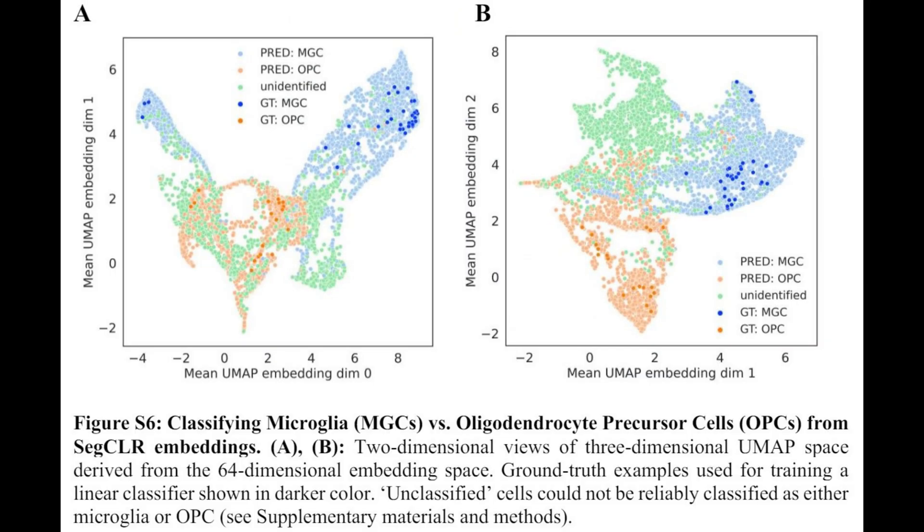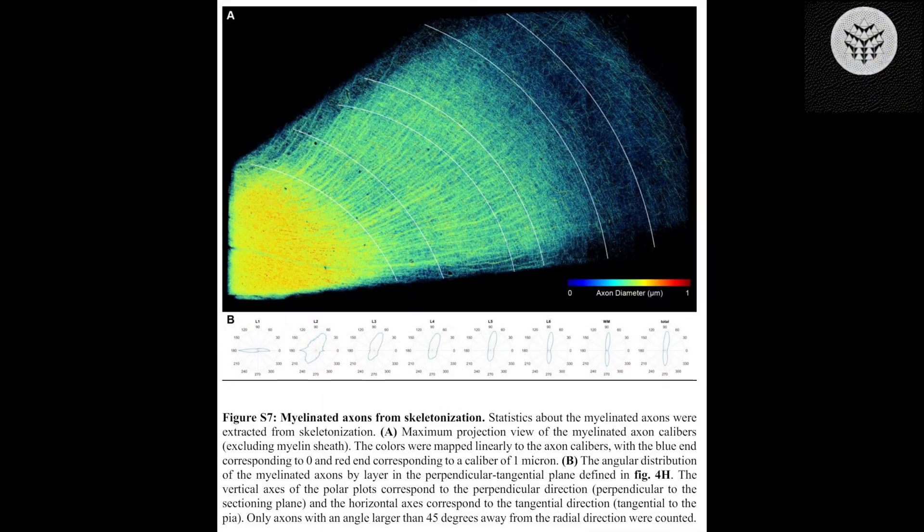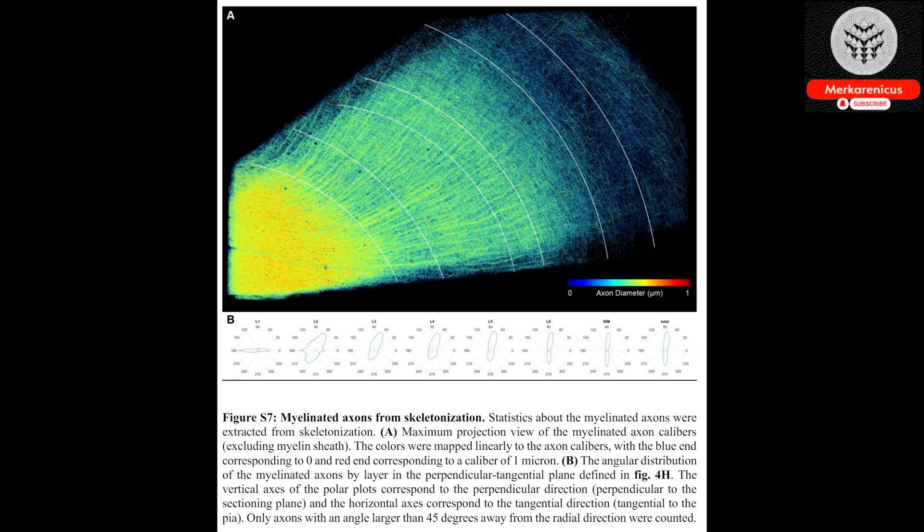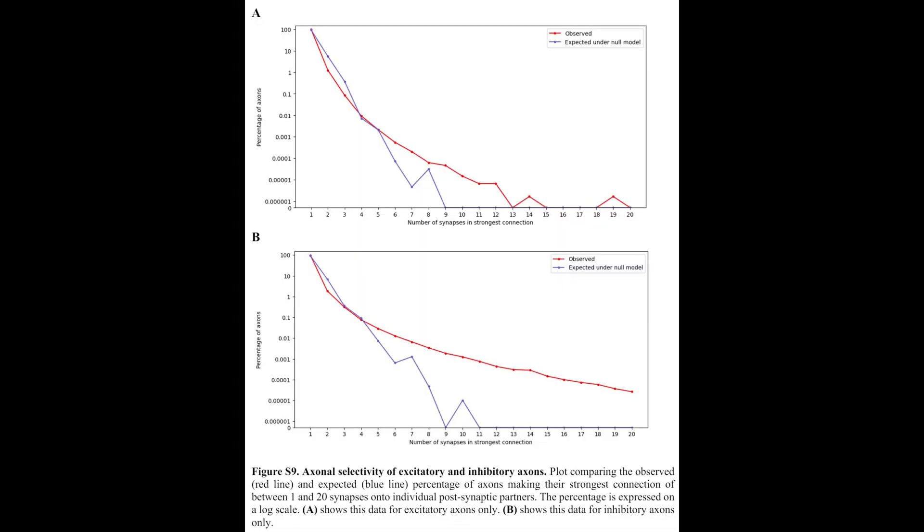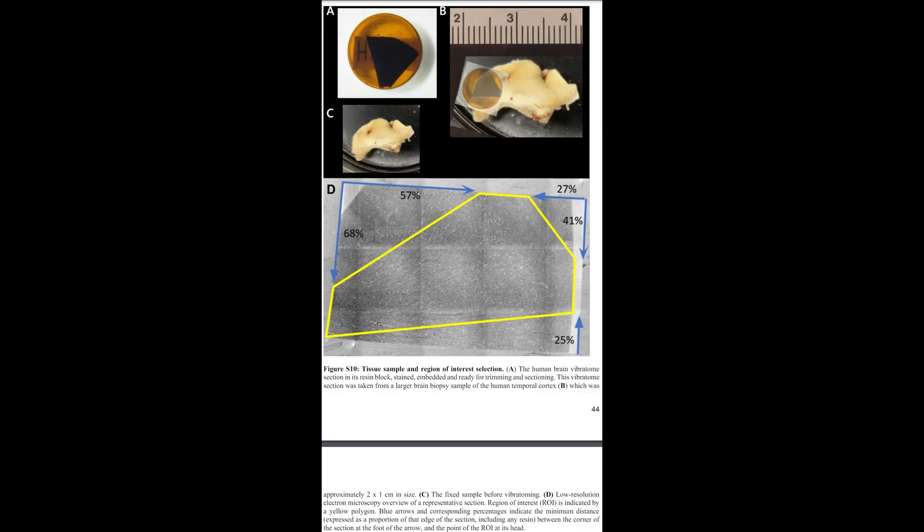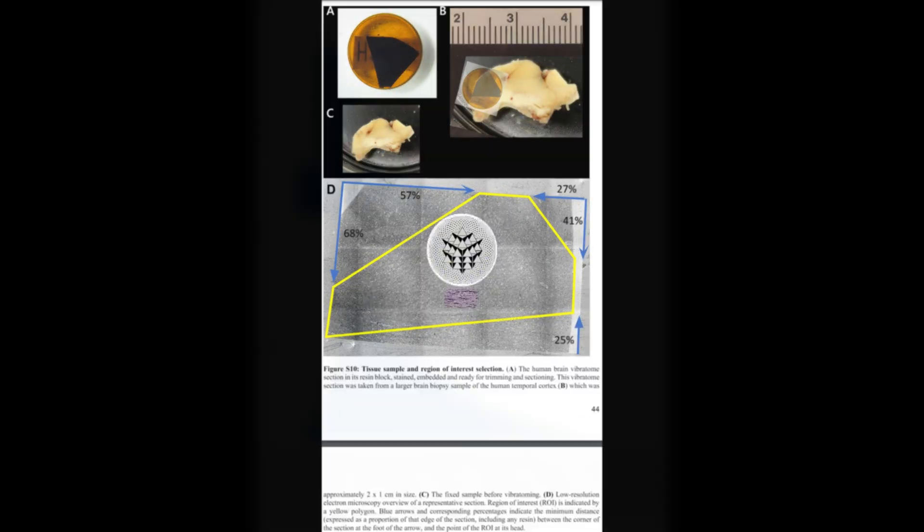Additionally, the research team made note of peculiarities within the brain tissue, specifically a limited number of axons that formed elaborate spirals. As the sample was derived from an individual with epilepsy, it remains uncertain whether these unconventional formations are indicative of pathology or merely an infrequent occurrence.